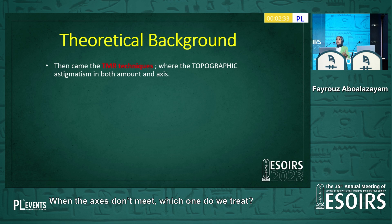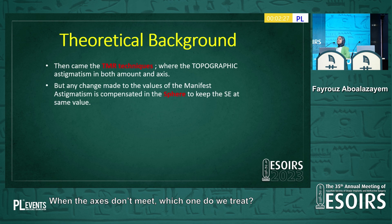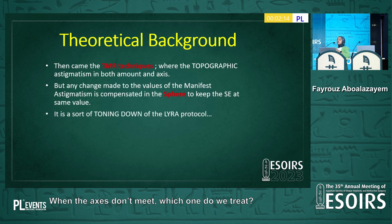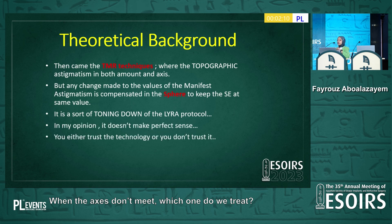After that, the topography-modified refraction (TMR) technique was introduced, in which the astigmatism amount and axis from the topolizer were taken, and the sphere was modulated to keep the same spherical equivalent as the manifest refraction — a sort of tuning down of the Lyra protocol. But in my opinion, it does not make perfect sense, because you either trust your technology and your machine or you don't.